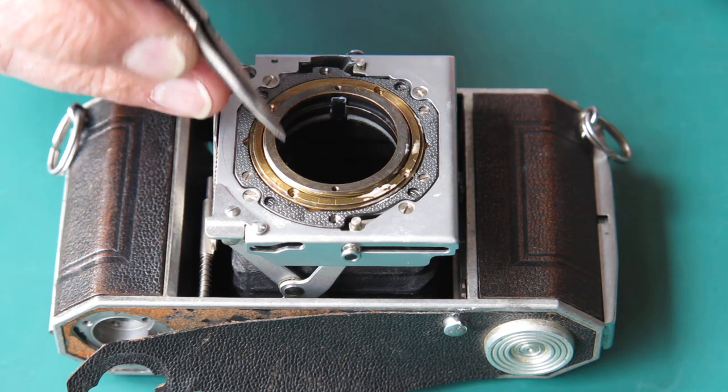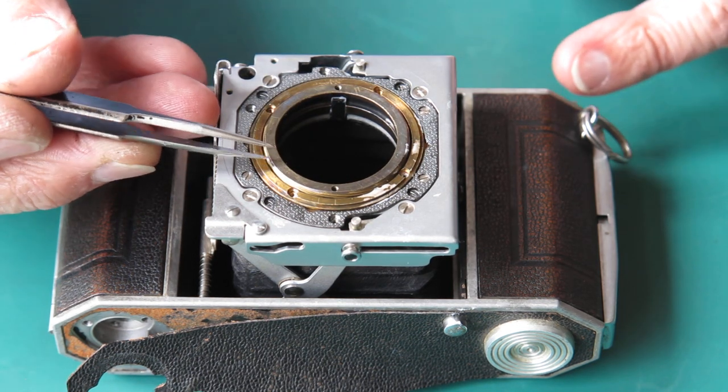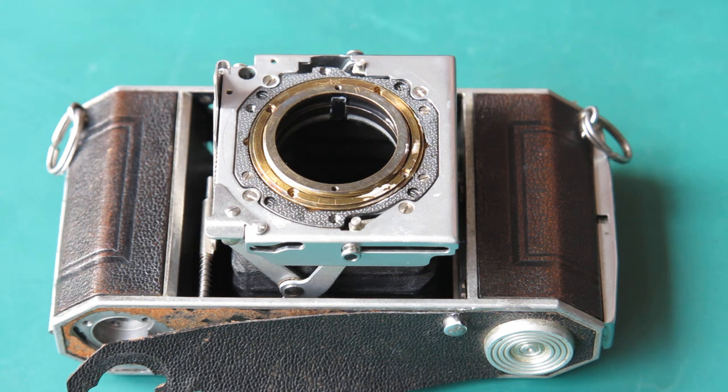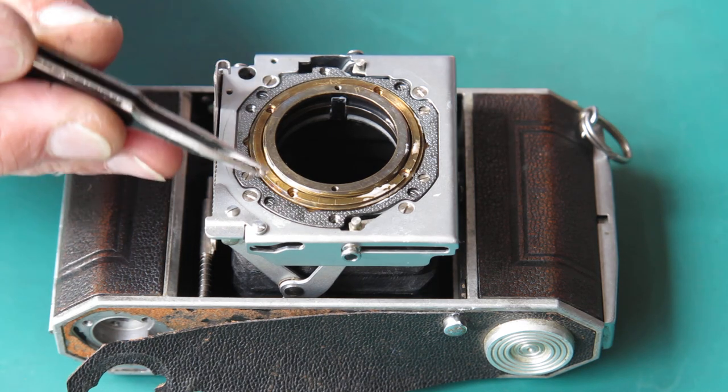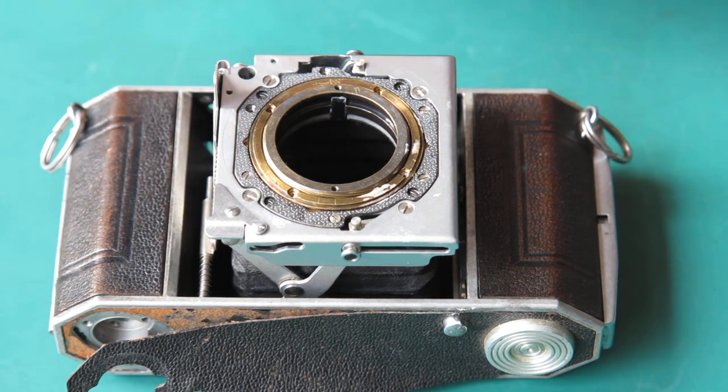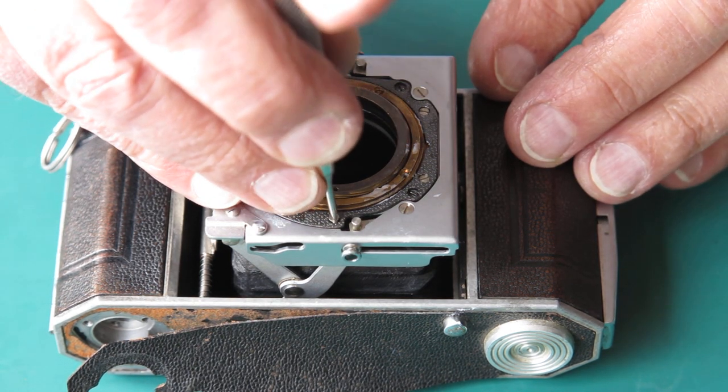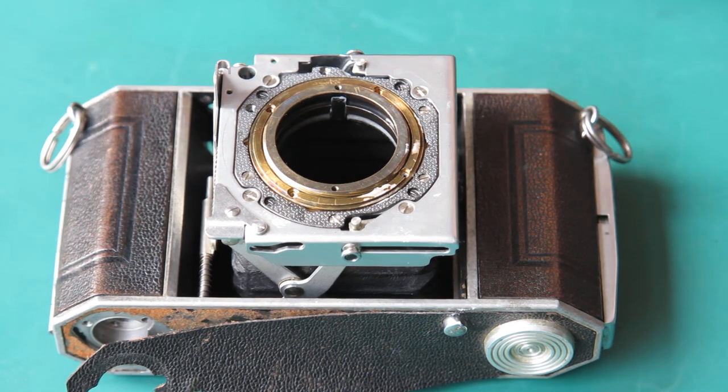Now here I've got the inner helical sticking out proud of the outer helical, which is good. If it was the other way around and you did these screws up tight, you'd probably find that the inner helical was bound up against the back of the mount and the focus wouldn't want to move.